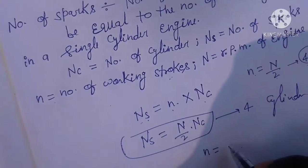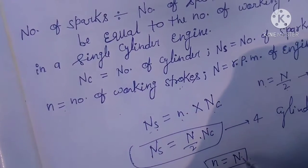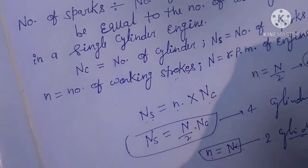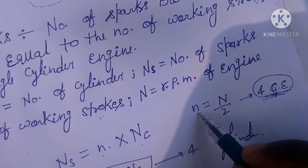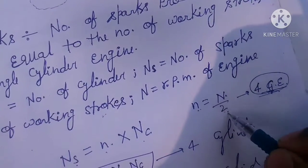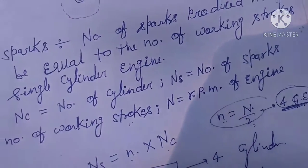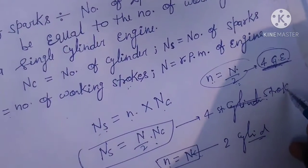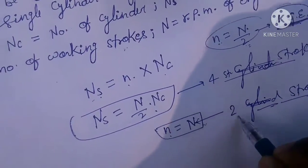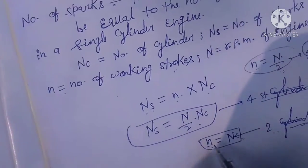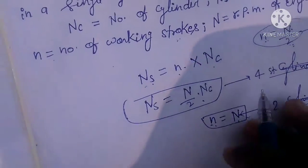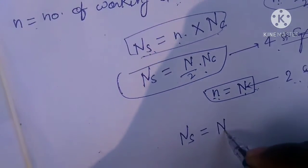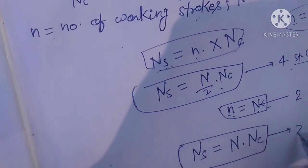For a four-stroke engine, small n equals capital N divided by 2, meaning engine speed divided by 2. For a two-stroke engine, small n equals capital N, meaning the working stroke equals the engine speed directly.